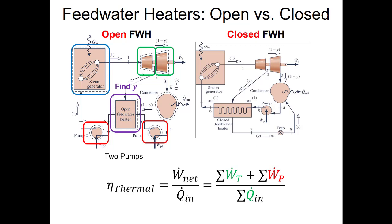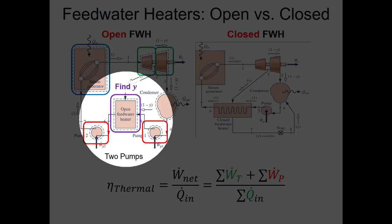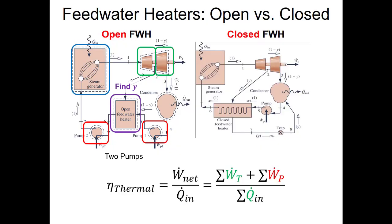The key in these regenerative cycles is finding the diverted mass flow rate y. For an open feed water heater, we do a first law analysis: the sum of m-dot-in times h-in equals the sum of m-dot-out times h-out. Some mass flow rate terms will be a function of y, and if you know all the enthalpies, you can solve for y. For a closed feed water heater, we have two turbines, one pump, and heat addition in only one place.